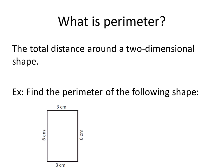To find the perimeter, all you do is add all the side lengths. So you add 3 centimeters plus 6 centimeters plus 3 centimeters plus 6 centimeters, and that's going to equal 18 centimeters. That's how you'd find the perimeter of that shape.